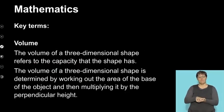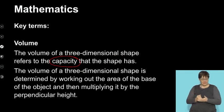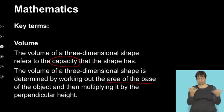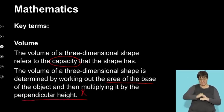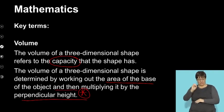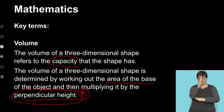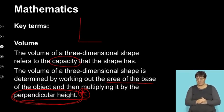The volume of a three-dimensional shape refers to the capacity that the shape has. The volume of a three-dimensional shape is determined by working out the area of the base of the object, and then it is multiplied by the perpendicular height. If you've tuned in before, you know I've always made a fuss about the fact that we have to multiply the base by the perpendicular height.